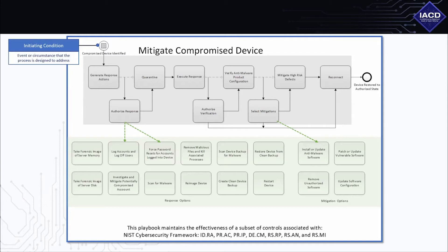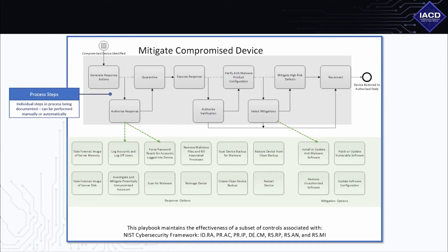The second type of content found in an IACD playbook is the process steps. Every security process consists of the major activities an organization should conduct to satisfy policies and procedures in response to an initiating condition. Regardless of the organization's process maturity or level of automation, these process steps are the core content of a playbook — for example, generate response actions, authorize response, quarantine, etc., as in the example here. Organizations can use generalized playbooks to develop workflows and subsequent local instance definitions containing more granular details on the prescribed actions.